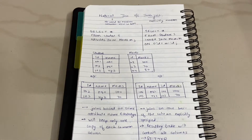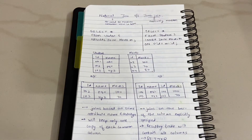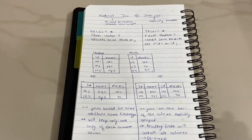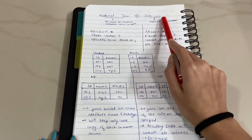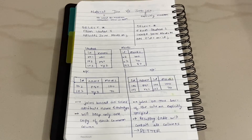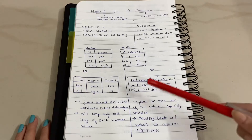Hello everyone, welcome back to my another video. In today's video we're going to talk about natural join and inner join — the difference between the two. Joins are basically used for joining two or more tables based on a common column.